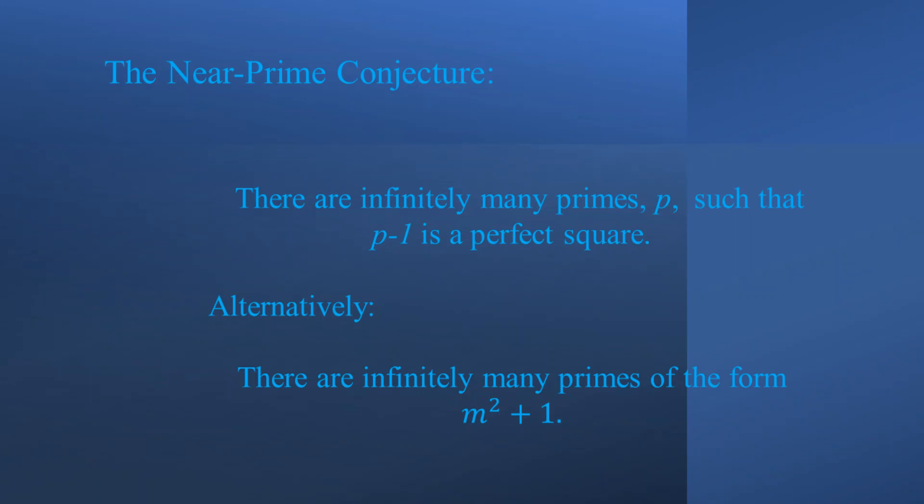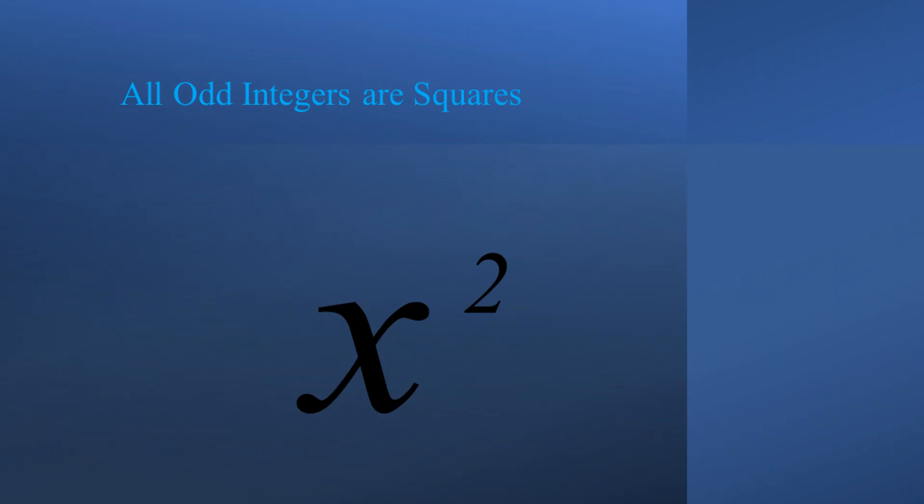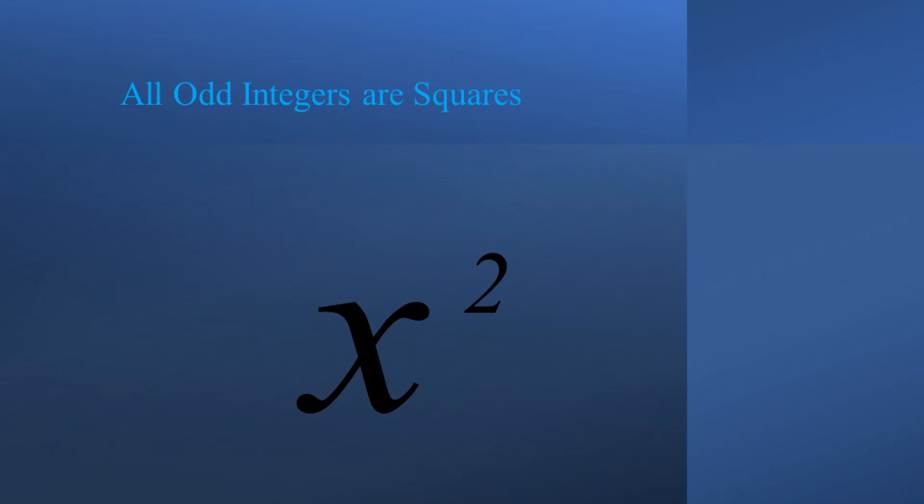What I discovered was that these four Landau problems are really just four expressions of the same basic concept: all odd integers are squares. Finding solutions to these four problems is based upon three keys.